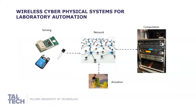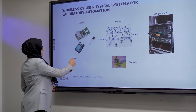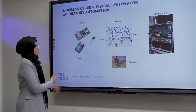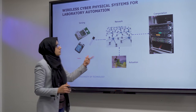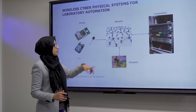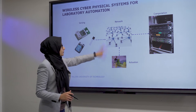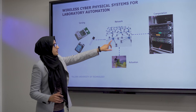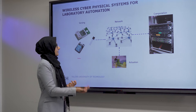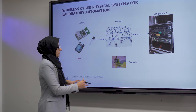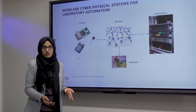A wireless cyber physical system has sensing, actuation, computation, and network. In a laboratory running a process, sensors observe the output of that process. The sensing units' information passes through a network to actuators and to a computation system. The computation system calculates the required response of the actuator and transfers that information to the actuator to achieve its objective.